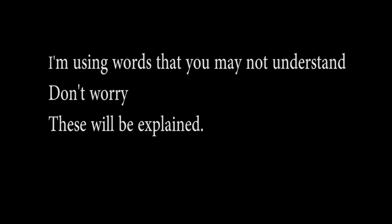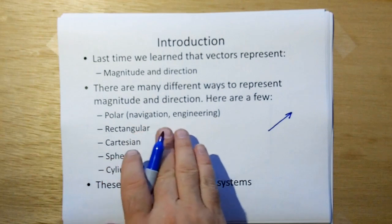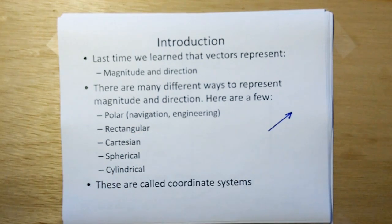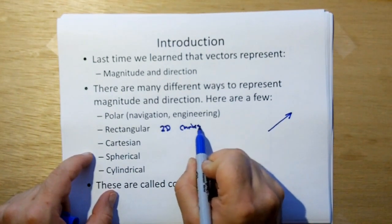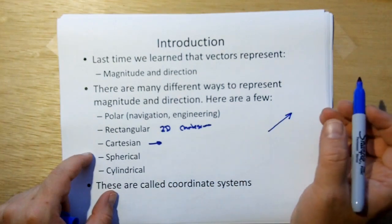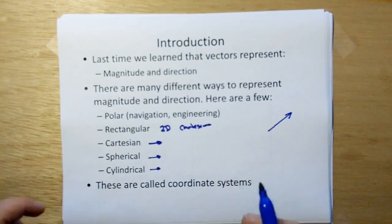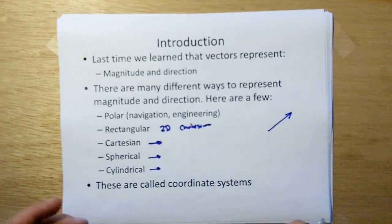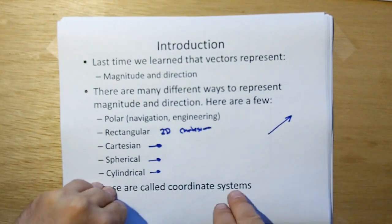We have two kinds of polar coordinate systems: one is the one that navigation systems use, the other one engineers use. There's rectangular, which is really just the two-dimensional version of Cartesian coordinates. Then there's Cartesian coordinates, which can go to pretty much any number of dimensions, even fractional dimensions. Then we have spherical and cylindrical coordinate systems. These are all called coordinate systems because it's how you describe the magnitude and direction of a vector.